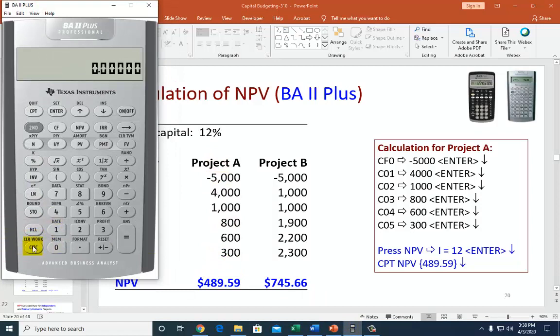So first thing you do here, you clear the screen. And then click second, clear TVM, second clear work. We may not be using that mode, but it's good practice. And then click CF, cash flow, because that's what we have here. After you click cash flow, notice how previous work shows up. So to get rid of this, clear work is a second function. So hit second, clear work, and boom, it's gone.